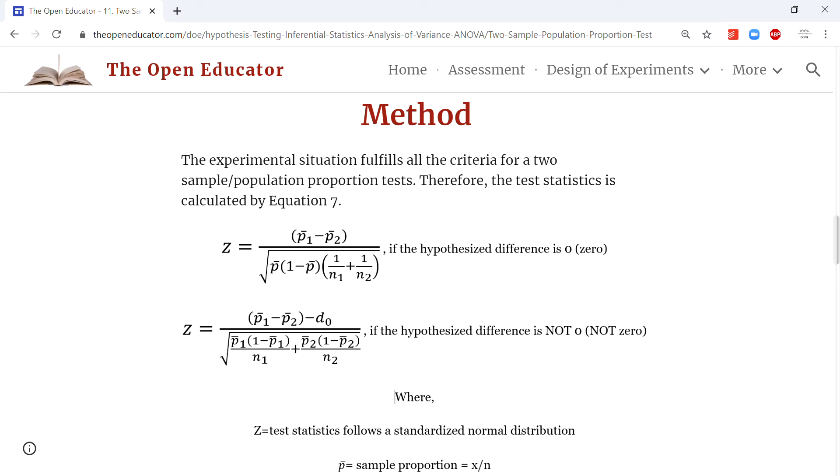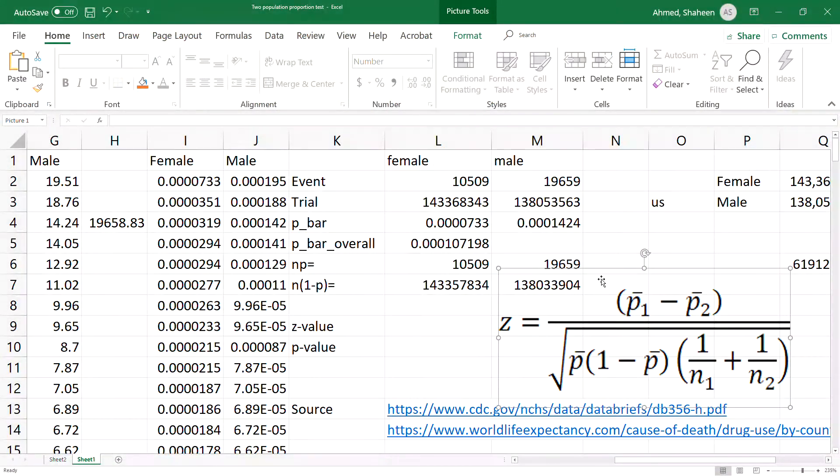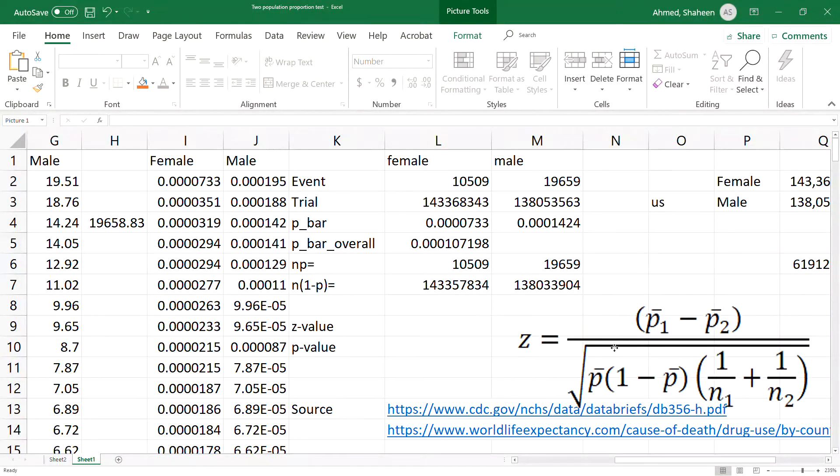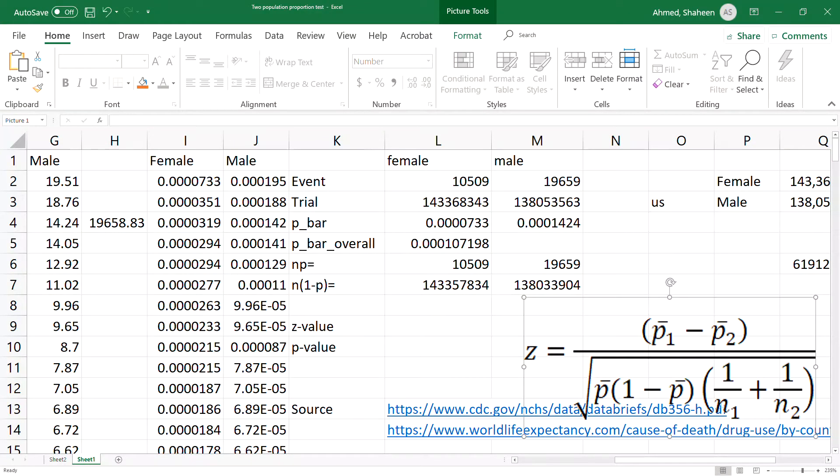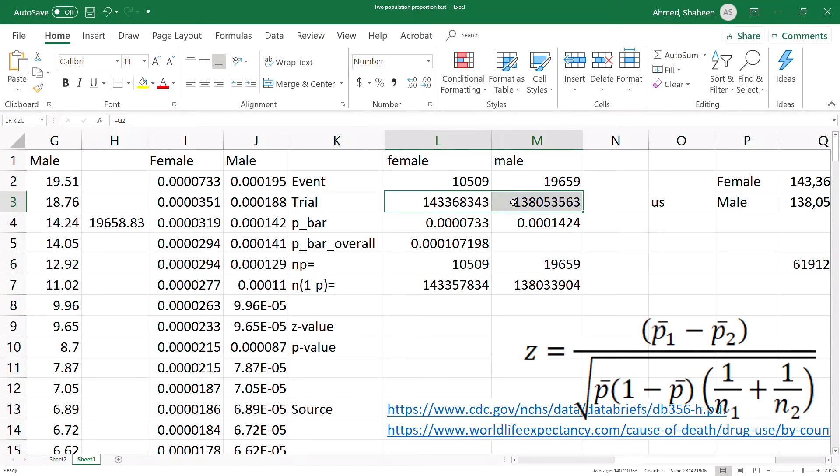Here are all the numbers that I have calculated. This is the formula - you can check that from openereducator.com. This is the number of females who died between that period, the average number of people per year. This is the average number of males. The total average number of people. Here we calculated the p-bar simply by dividing the number of people affected by the total number.